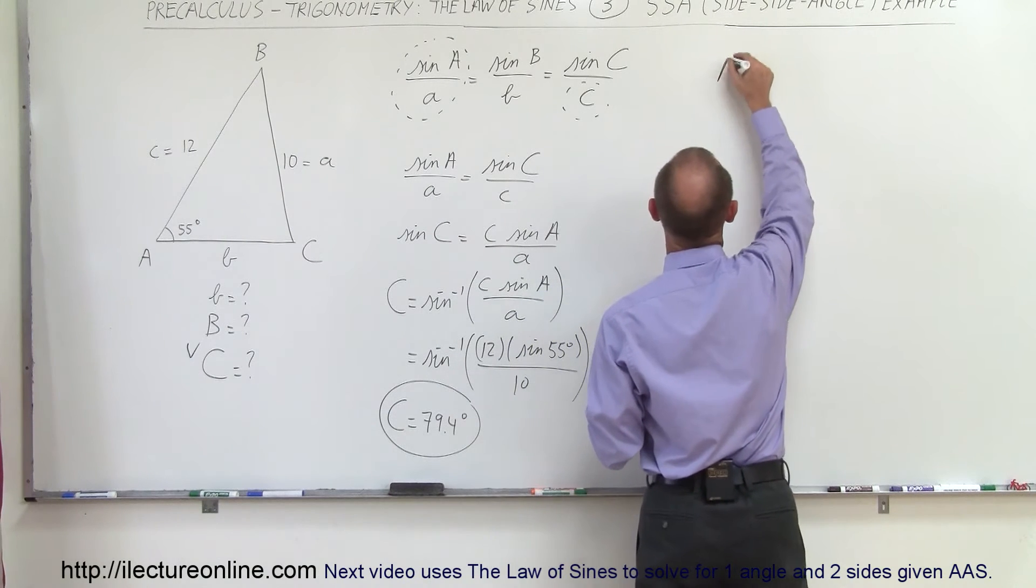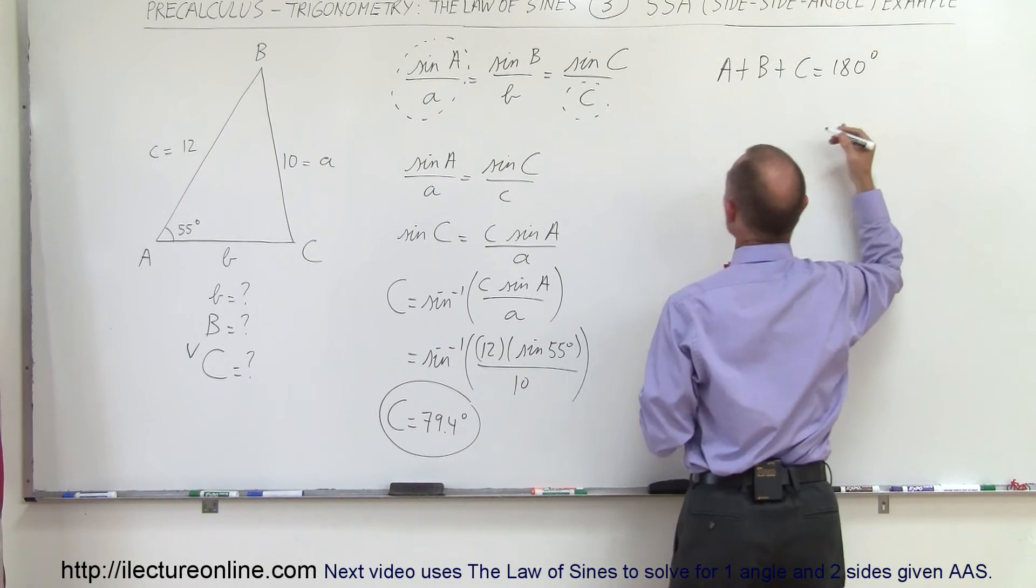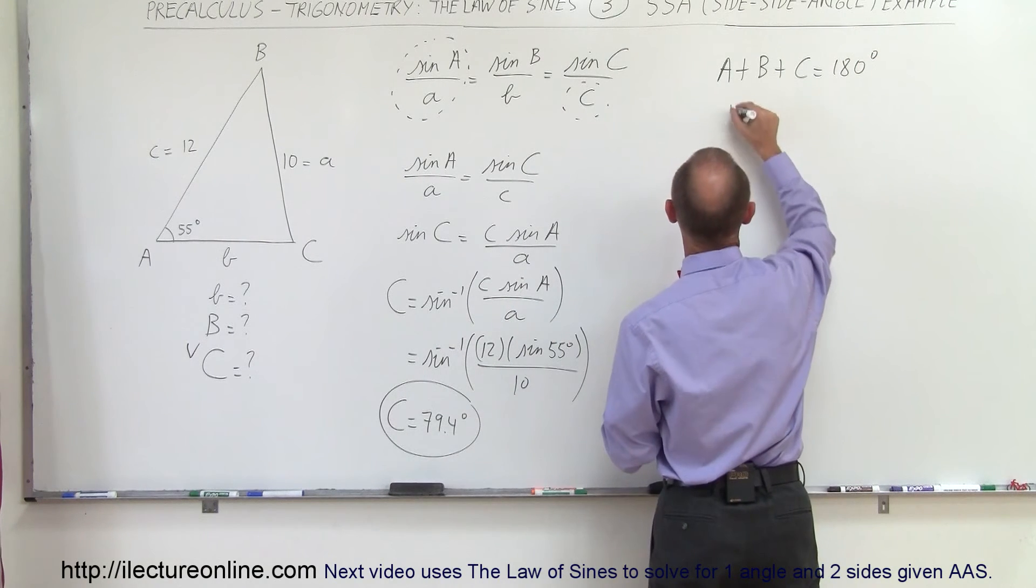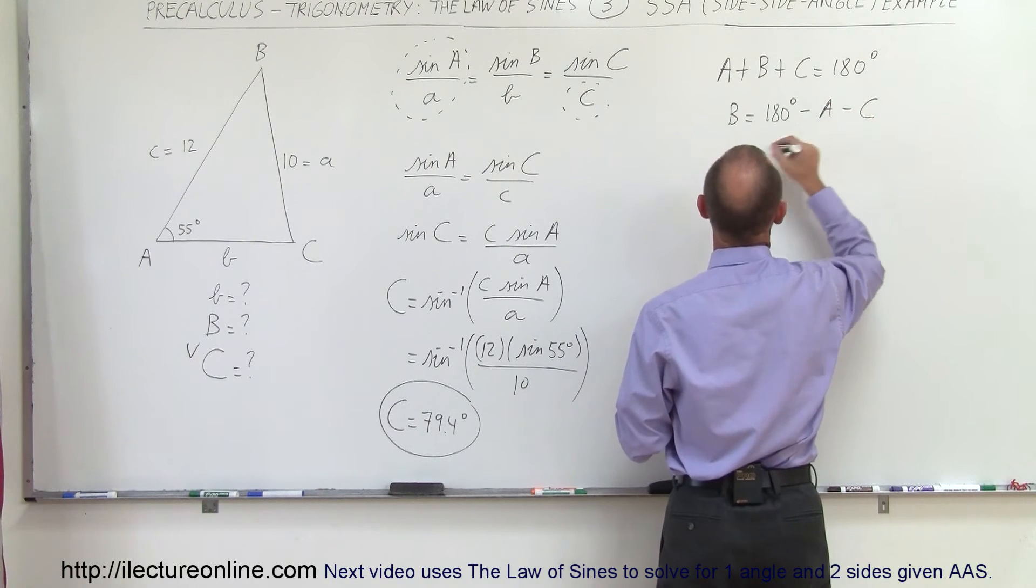So A plus B plus C is equal to 180 degrees, which means that the unknown angle B can be found by taking 180 degrees, subtract from that A, subtract from that C.